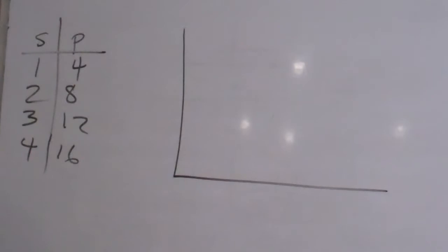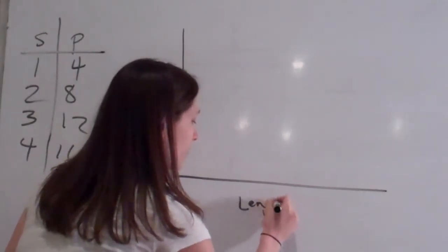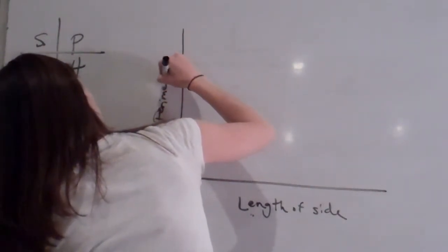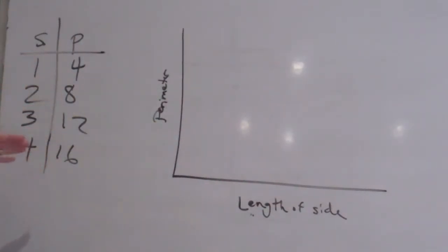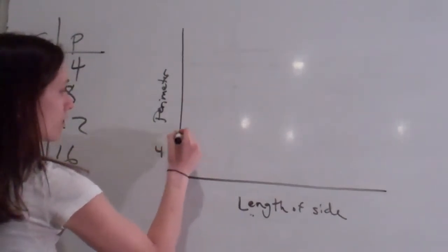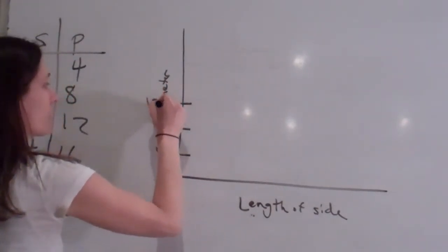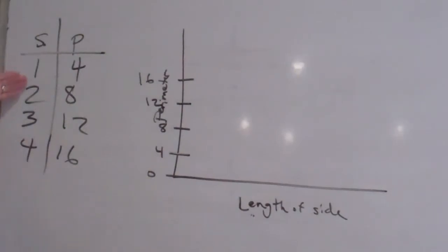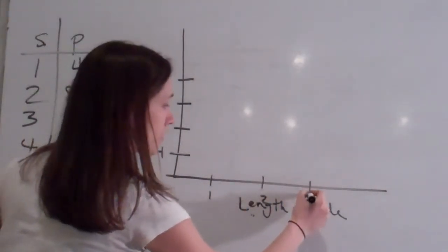Now, they're wanting me to graph this. They're wanting me to put the length of the side over here. And then the perimeter is going to go over here. Now, how do you want to number these? Because it goes all the way up to sixteen. Let's not go by one by one. Do you want to do by twos or by fours? By fours. So four, eight, twelve, sixteen. Because that's easiest. And then sides, we just go through four. So we have to number these one, two, three, four.